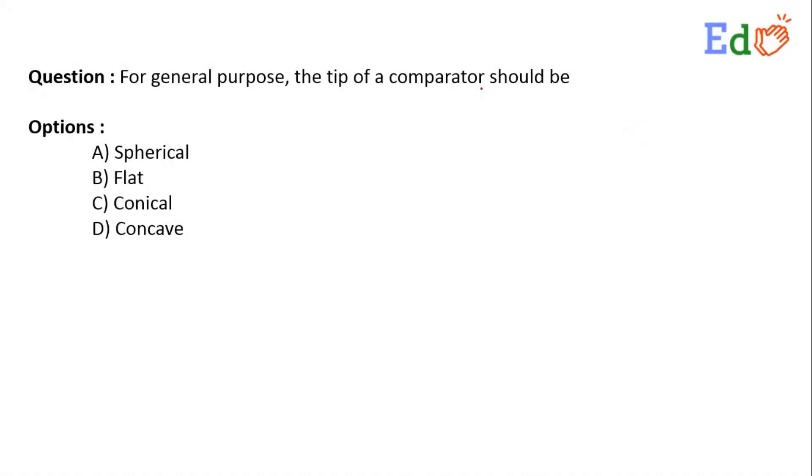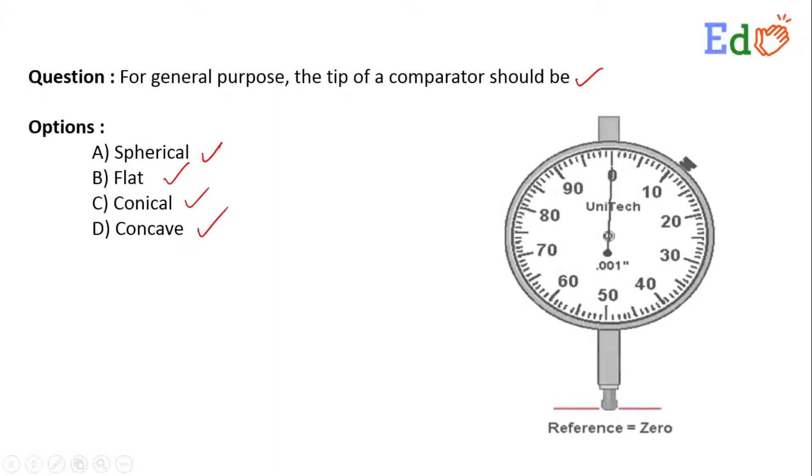Now consider the question: for general purpose, the tip of a comparator should be. The options are A) Spherical, B) Flat, C) Conical, D) Concave. Watch this figure. This is a figure of a dial indicator.